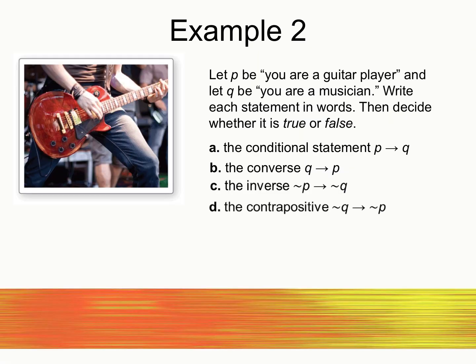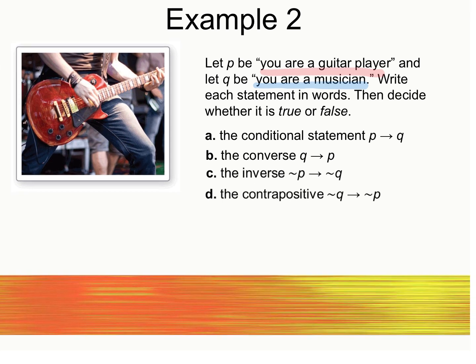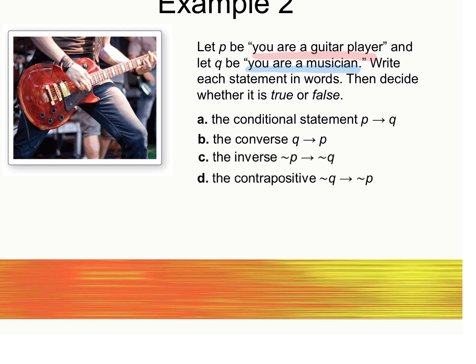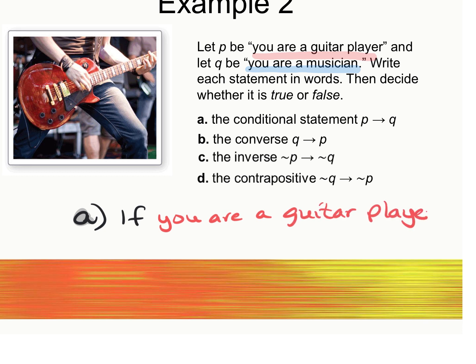This one says: let P — the hypothesis — be 'you are a guitar player,' and the conclusion Q be 'you are a musician.' They want us to write statements — first a conditional, then a converse, inverse, and contrapositive — and state if each is true or false. For my conditional, I'm going to use the same order, P then Q: if you are a guitar player, then you are a musician.